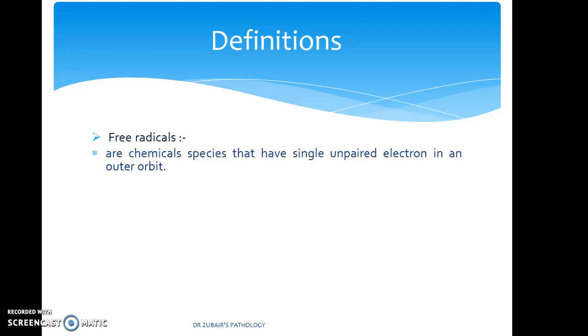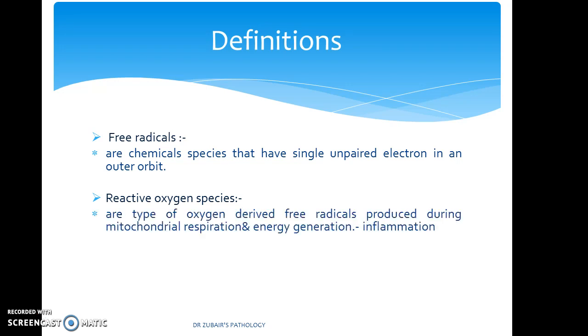Free radicals are chemical species that have single unpaired electron in an outer orbit. Reactive oxygen species are type of oxygen derived free radicals produced during mitochondrial respiration and energy generation and also in inflammation.